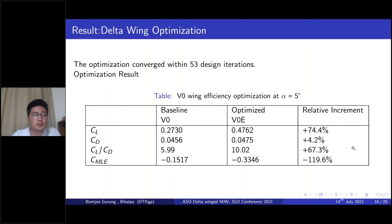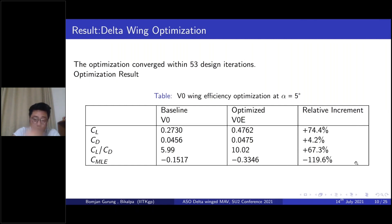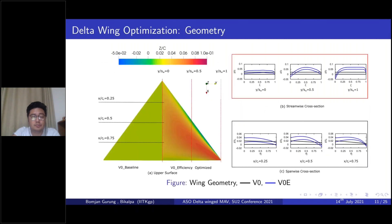The optimization converged within 53 design iterations. We see a tremendous improvement in the coefficient of lift and a very small increase in drag, resulting in a CL/CD increase of approximately 67.3%. The pitching moment was also higher for the optimized wing. Based on these results, we also conducted analysis across the full operating range of the delta wing, from 0 to 20 degrees angle of attack.